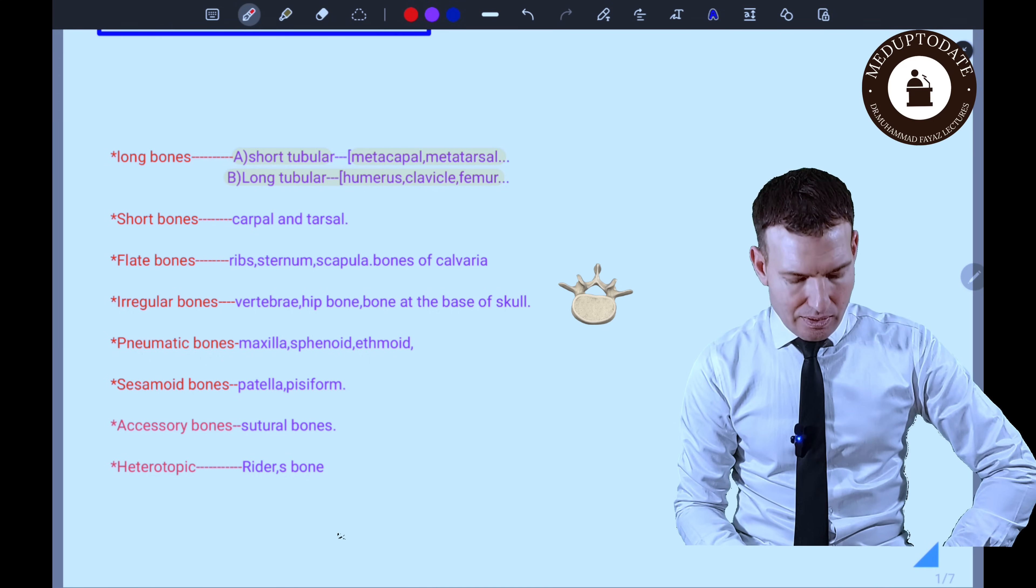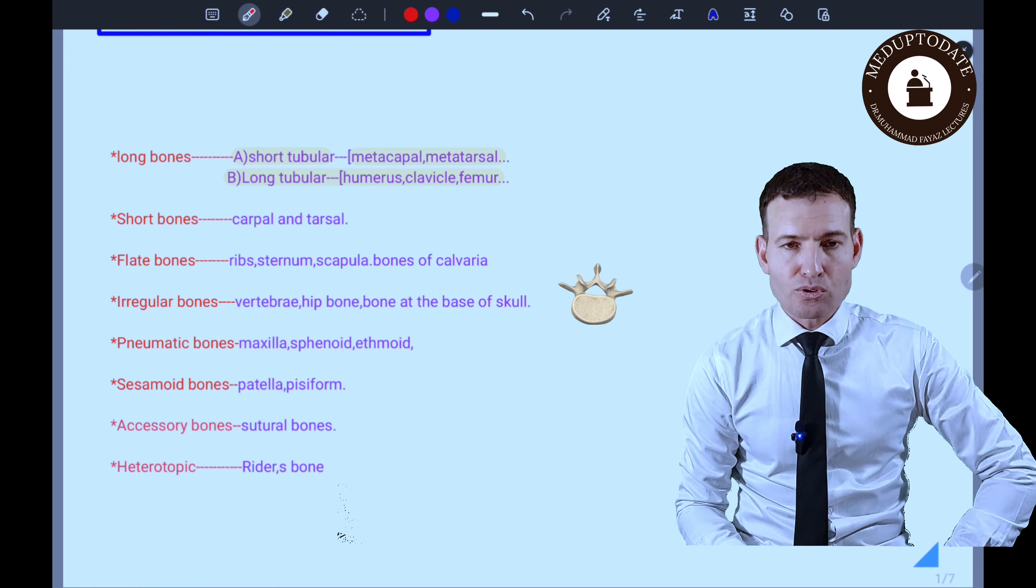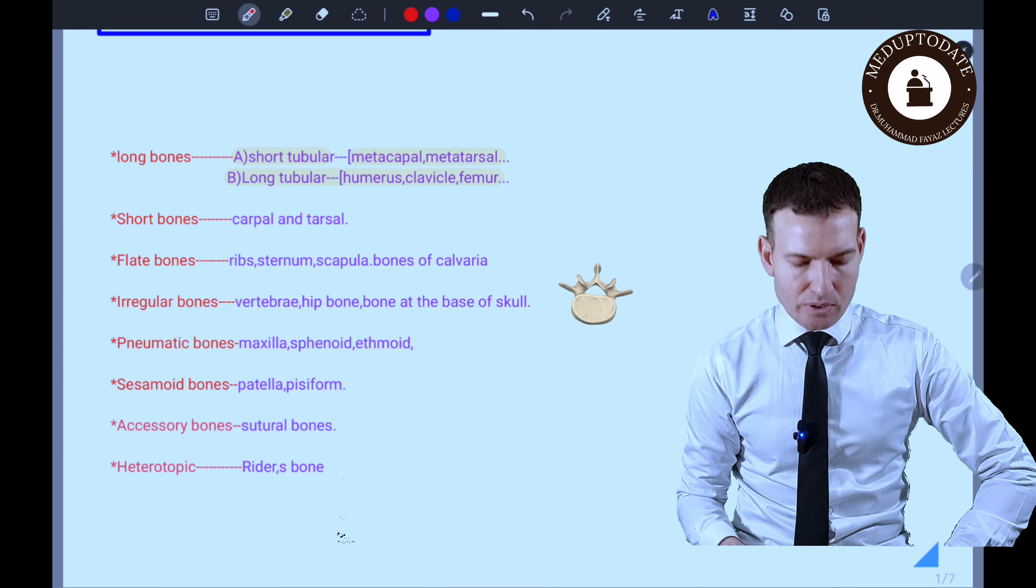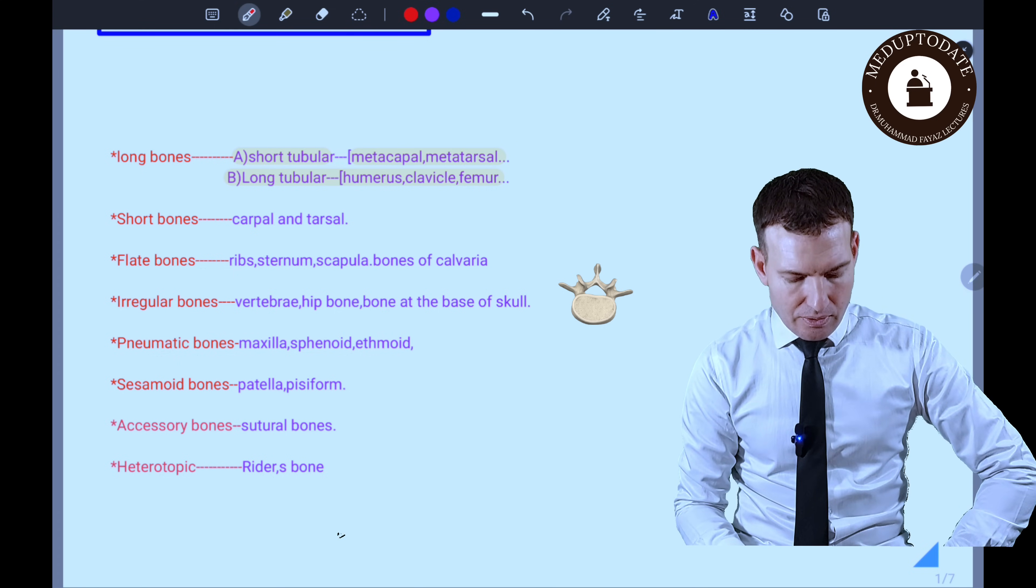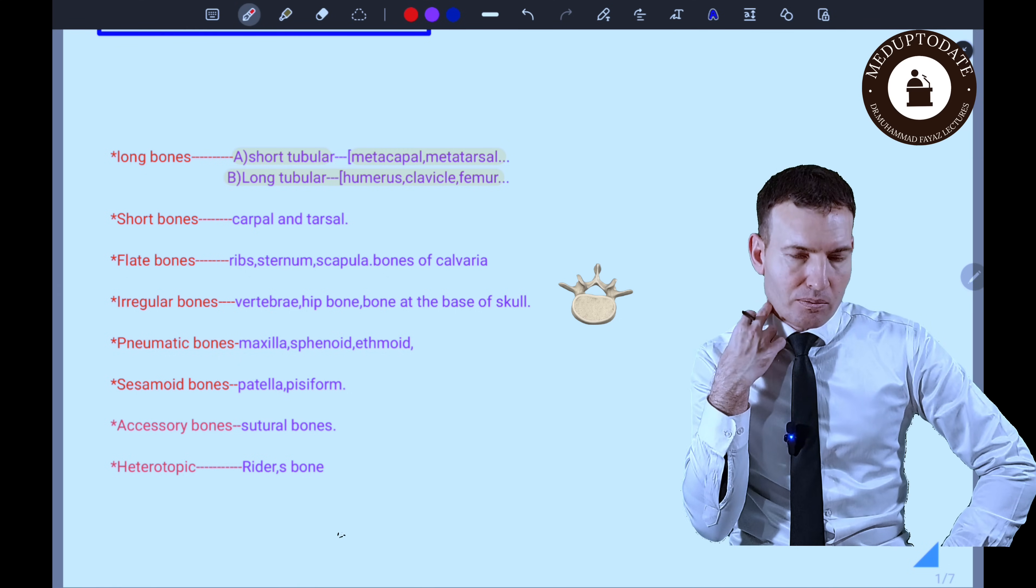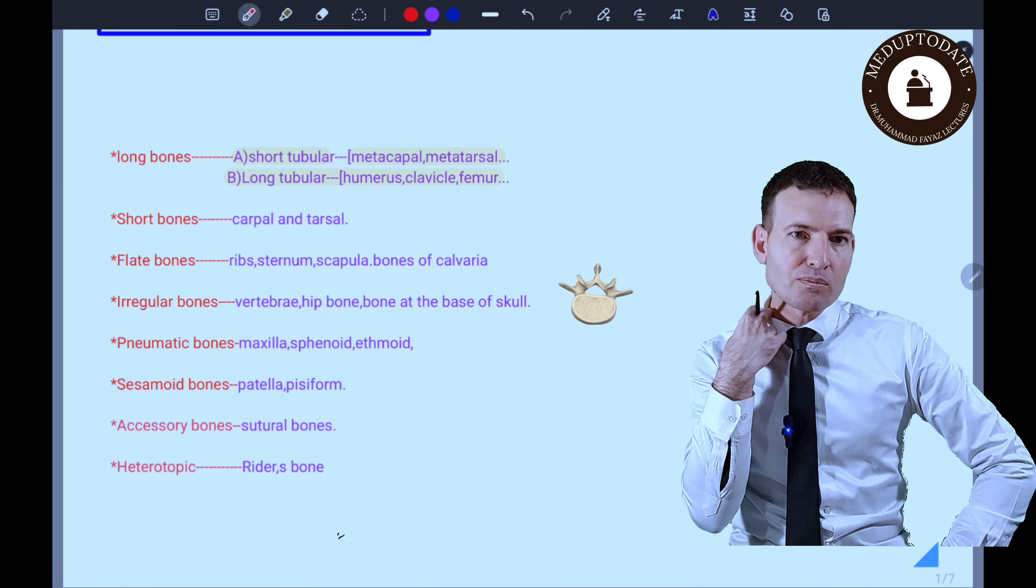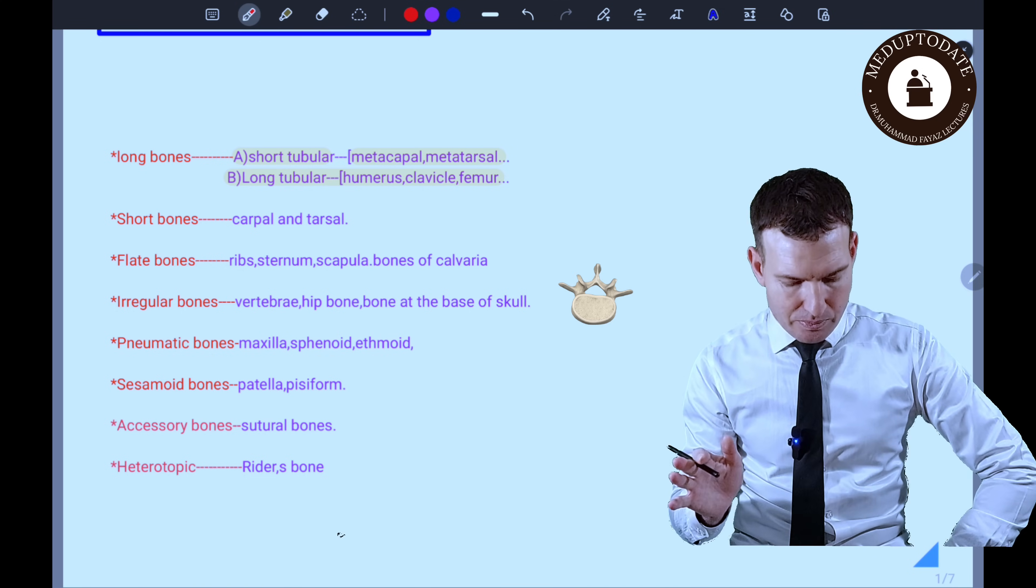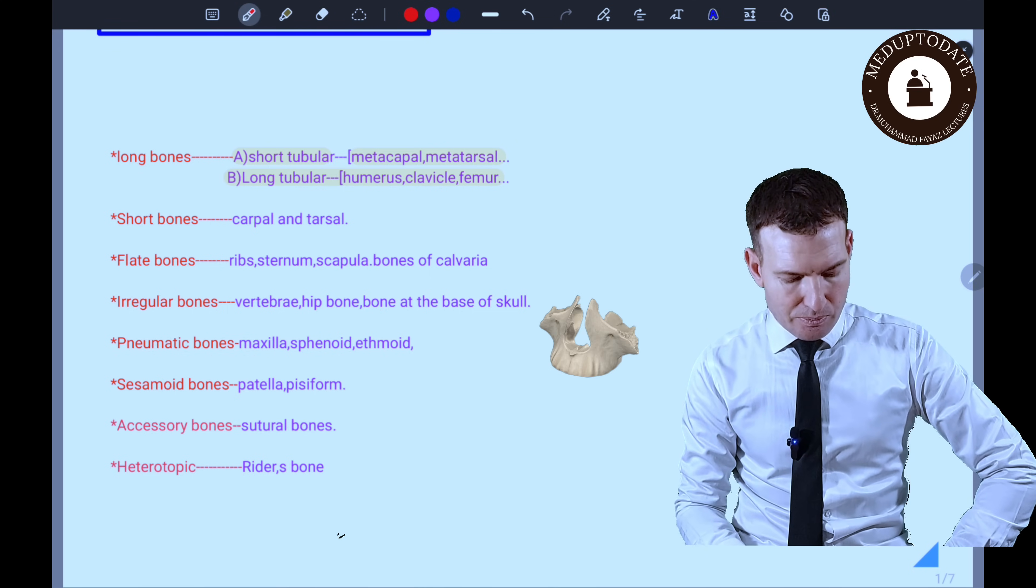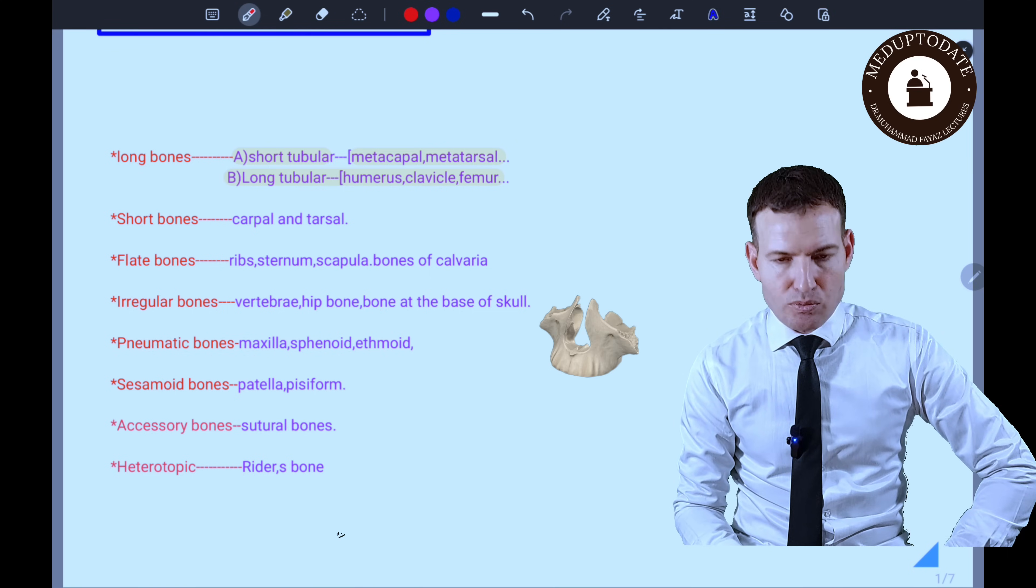These bones are flat in shape. These include ribs, sternum, scapula, and bones of the calvaria. Then we have irregular bones that don't fit into other categories—their shape is irregular. These are vertebrae, hip bone, and some bones of the skull.